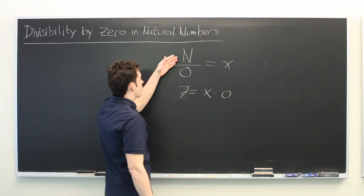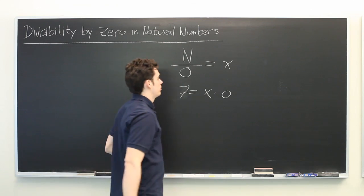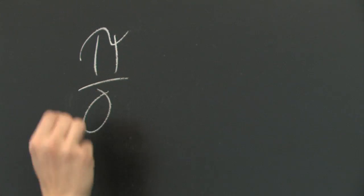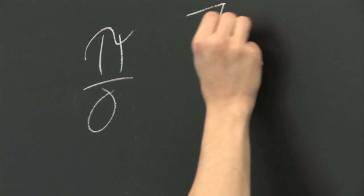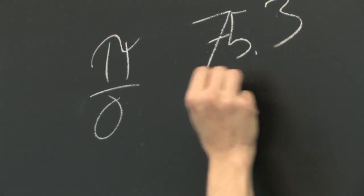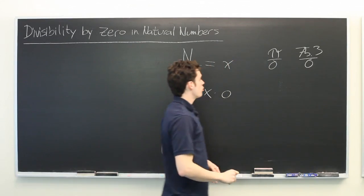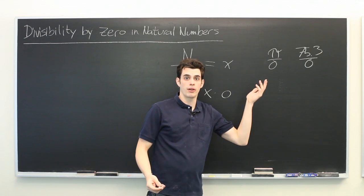And this is not just true of the natural numbers, but of all numbers. Pi over zero, 75.3 over zero. Any number you put on top, divide by zero, is undefined.